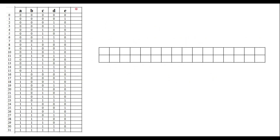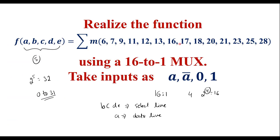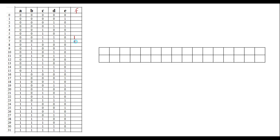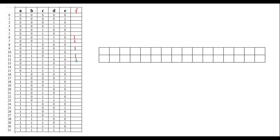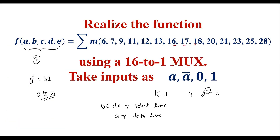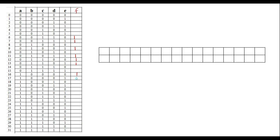These minterm values indicate that for these values the output is 1. So here the output f is 1 for: 6, 7, 9, 11, 12, 13, 16, 17, 18, 20, 21, 23, 25, and 28. In all other cells the output is 0.